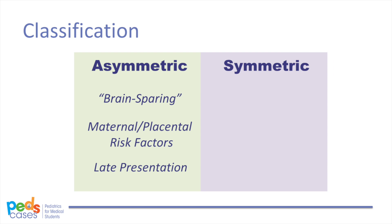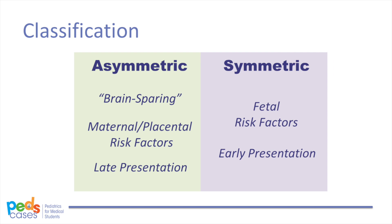On antenatal ultrasound, asymmetric IUGR fetuses show a reduction in abdominal circumference only, with normal head circumference, biparietal diameter, and femur length. After birth, the baby's weight is reduced in relation to head circumference and length. In symmetrical IUGR, the whole baby is small, including the head. It is usually caused by fetal factors and tends to present earlier in the pregnancy. Antenatal ultrasound scans show a reduction in abdominal circumference as well as head circumference, biparietal diameter, and femur length. After birth, the baby's head circumference, length, and weight are all reduced.